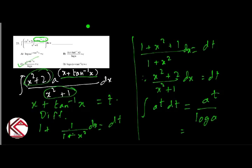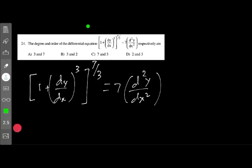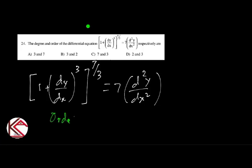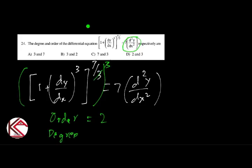Question 24: Degree and order of (1 + (dy/dx)³)^(7/3) = 7d²y/dx². Order is 2 since d²y/dx² is the highest derivative. For degree, cube both sides to clear the fractional exponent: the left side becomes (1 + (dy/dx)³)⁷ and the right side becomes (7d²y/dx²)³, making degree of d²y/dx² equal to 3. The answer is order 2, degree 3.